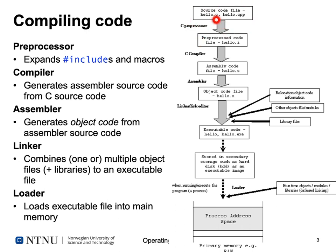To compile code, we have this whole procedure. Starting with some C source code, it's first handed to the C preprocessor, which generates C code with expanded macros and included header files. This is then passed to the C compiler, which generates assembler code. The assembler code is then assembled, generating a single object file — a binary file containing instructions and data for our processor — generated from our C source code file. We do this for every single C source code file in our project.